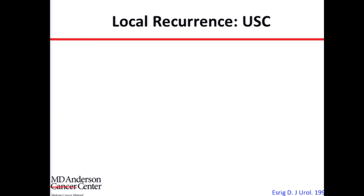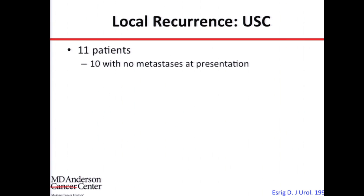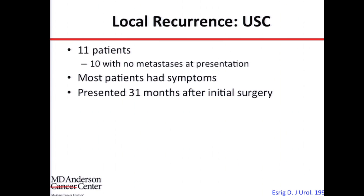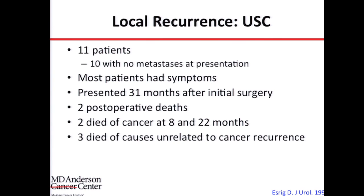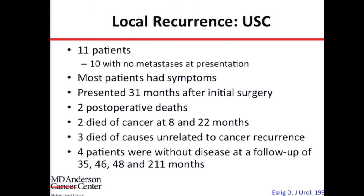The earliest published experience on local recurrence after radical nephrectomy is from colleagues at the University of Southern California — 11 patients, 10 of whom had no metastases at the time of recurrence. Most patients presented with symptoms, reinforcing the importance of asking about symptoms in every visit. Presentations occurred about two to three years after initial surgery. Of those who had surgery, two of 11 patients died after the operation — illustrating how serious these operations can be. Two died from cancer at one to two years after surgery, three died of unrelated causes, but four patients were still disease-free at last follow-up — just over 30%.